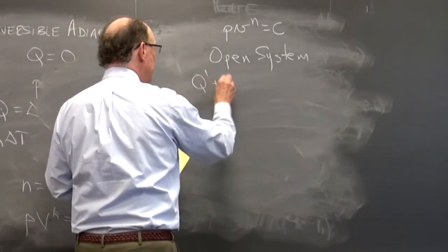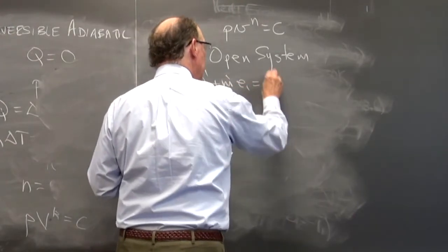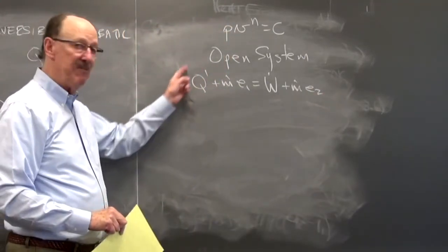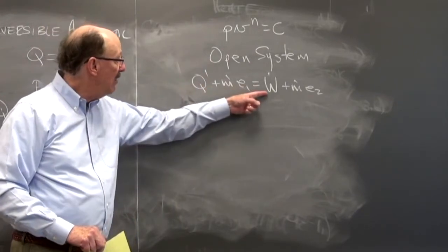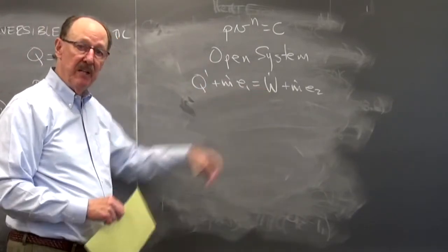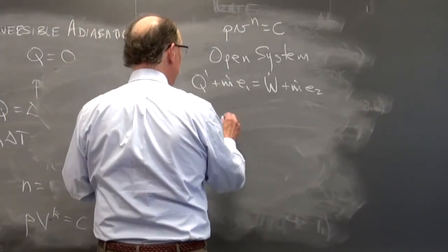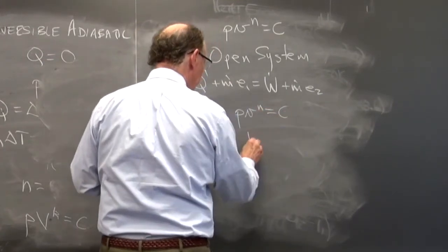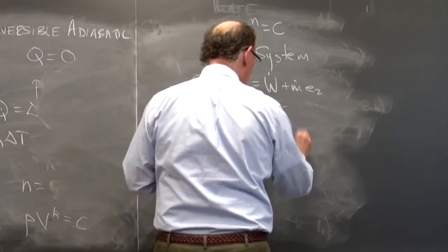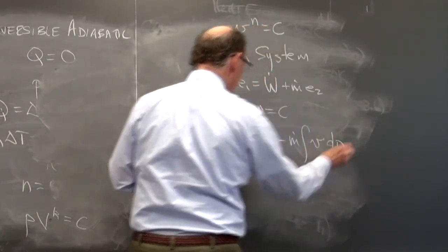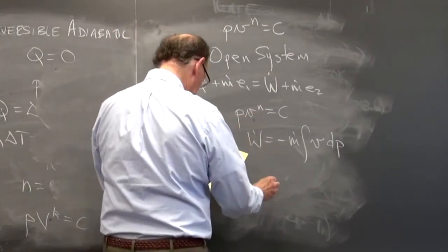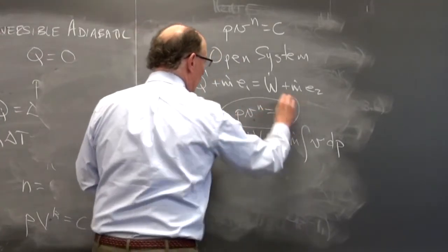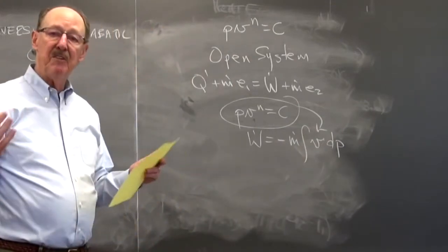And I have Q dot plus M dot E1 is equal to W dot plus M dot E2. In this case we don't have a simplified form for Q dot, so I can solve for W dot in terms of an open system. So for open system polytropic, I have PV to the N is equal to a constant. I know that W dot is equal to minus M dot VDP. So I can solve for V and I'm going to put it in here and solve the equation for the power.